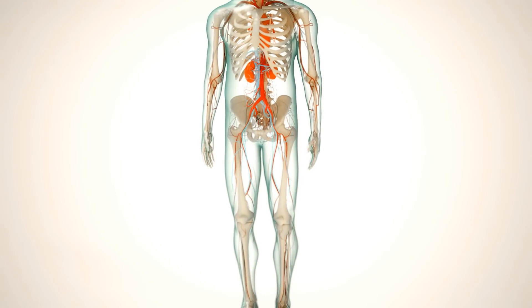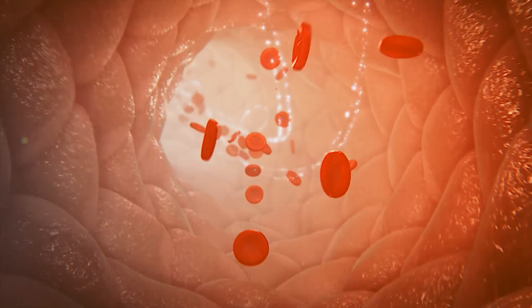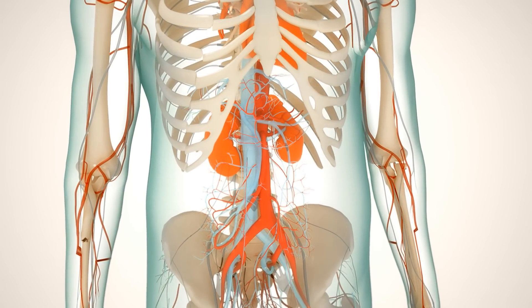Gout and hyperuricemia are independent risk factors for hypertension, CVD, CKD, and diabetes, and have been linked to obesity and osteoarthritis.